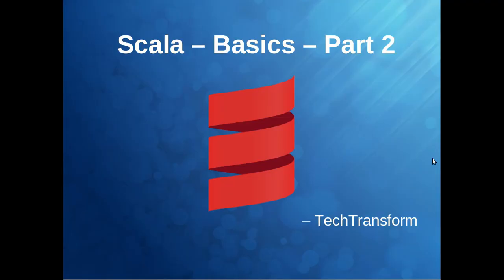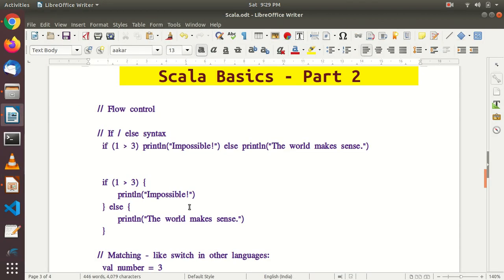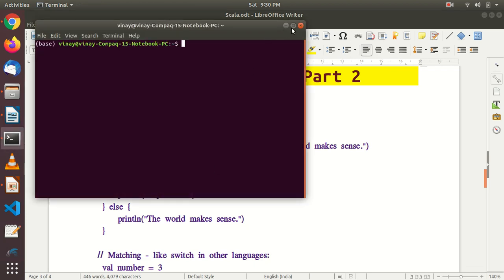Hello, welcome to Tech Transform. This is the continuation of Scala Basics Part 1. In Scala Basics Part 2, we are going to cover flow control statements, switch-like case statements, for loop, while loop, do-while loop, and how expressions return values in Scala and how functional programming concepts work. I've prepared a document for that. Let's start the terminal and go inside the Scala prompt.